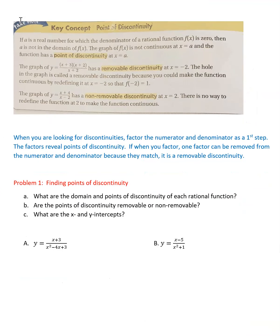Here are the points of discontinuity: if a is a real number for which the denominator of f(x) is 0, then a is not in the domain of f(x), the graph is not continuous at x = a, and the function has a point of discontinuity at x = a. Basically, is there a skip, a hole, a jump? Those spots are points of discontinuity.